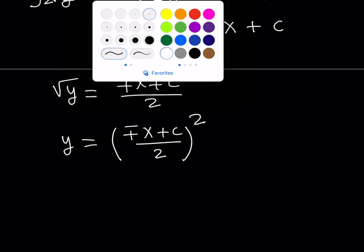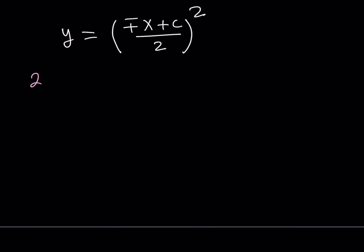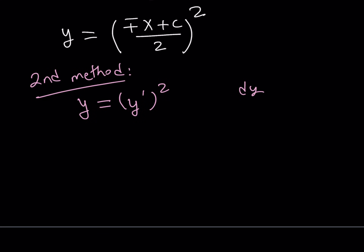Let's talk about the second method. The second approach is quite different. I'm going to write the equation as y equals y prime squared, since dy over dx means y prime, the derivative of y. I would like to differentiate both sides, because I want to get y prime on the left-hand side. Since y and y prime are both functions of x — and of course y is differentiable since we're solving a differential equation — let's differentiate both sides.